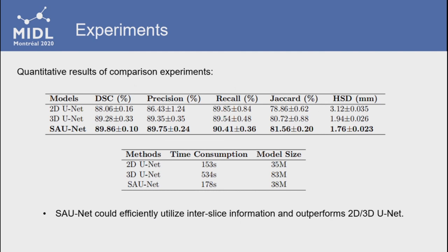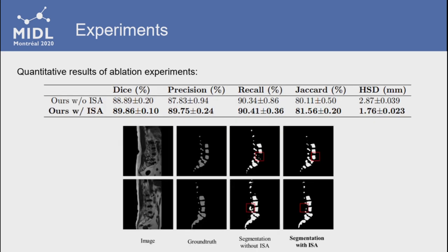For the experiments, we compare our SA-UNET with 2D and 3D UNET on the same experimental environment. The cross-validation results are shown in the table. From the results, we could see that our method achieves better segmentation results on all metrics. Besides, the computation cost is only slightly higher than two-dimensional networks. For the ablation experiments, with the application of the inter-slice attention model, some errors that tend to be misclassified by 2D networks are improved, which is shown in the right block in the figure.